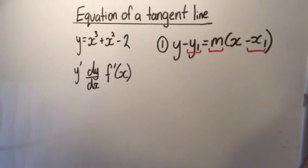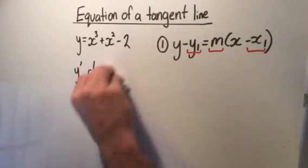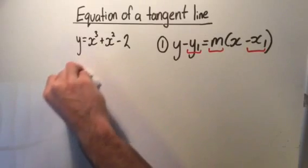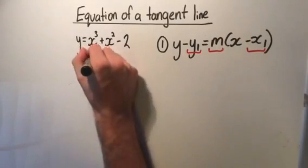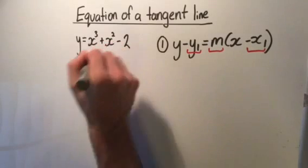So in this question, when we have y equals x cubed plus x squared minus 2, let's say we have to find the equation of a tangent line at x equals 1.